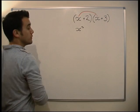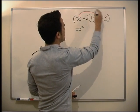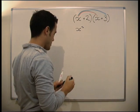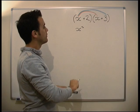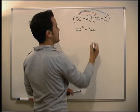Next thing we do, we times the x by 3. That's going to give us plus 3x.